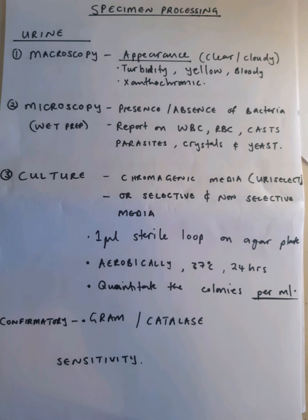Then we go to culture, where we use chromogenic media such as UriSelect, or selective and non-selective agar like blood agar. With urine culture, we have to report quantitatively. We always use a one microliter sterile loop and streak on our chromogenic media. Then we culture for 24 hours at 37 degrees Celsius in the presence of oxygen — aerobic conditions. We then report as colonies per milliliter of urine.